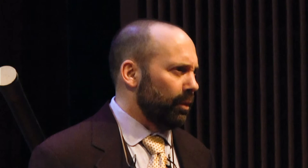This is very complicated, and we had to convince ourselves and others that we could make it work. So we built a one-sixth scale fully functional model of the JWST to demonstrate all our software algorithms and procedures for phasing the telescope and combining the 18 images. We maintained this at Ball Aerospace in Boulder, Colorado to use for anomaly resolution in orbit.